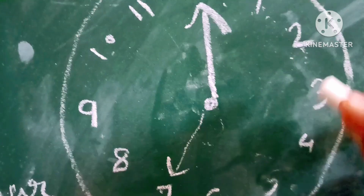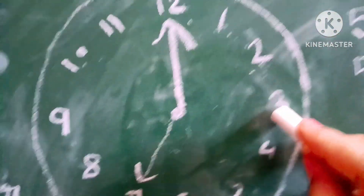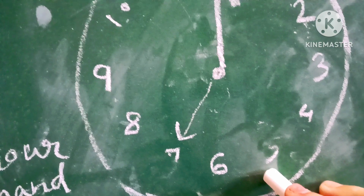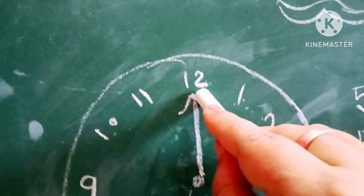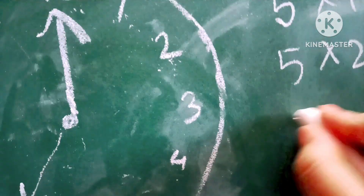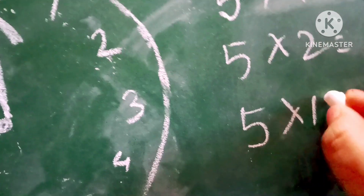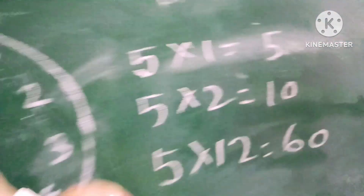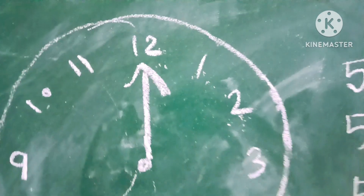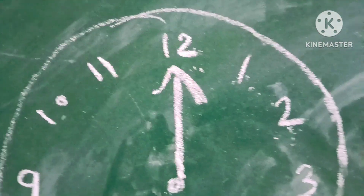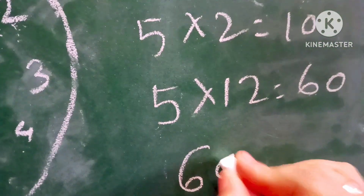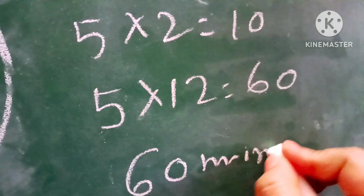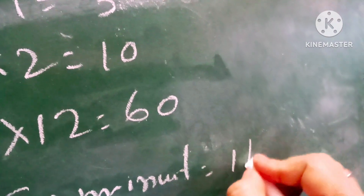So counting by fives: 5, 10, 15, 20, 25, 30... continuing around all 12 numbers gives us 60. So 5 multiplied by 12 equals 60. One full rotation of the minute hand equals 60 minutes. So 60 minutes is equal to 1 hour.